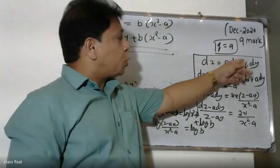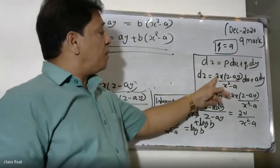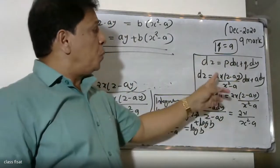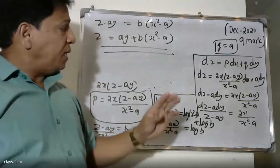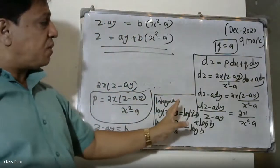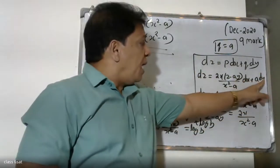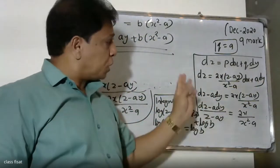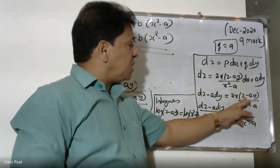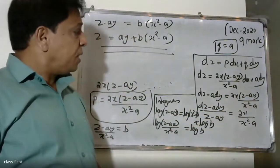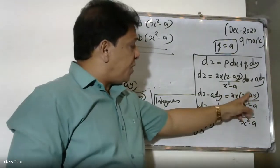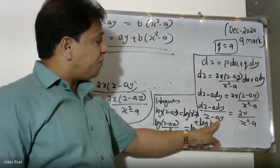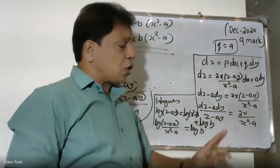The answer is z equals ay plus b into (x squared minus a). Noting that dz equals p dx plus q dy, where p and q: p equals 2x into (z minus ay) divided by (x squared minus a), and q equals a substituted. Rearranging when we integrate: dz minus a dy equals 2x into (z minus ay) divided by (x squared minus a) dx. This gives z minus ay equals 2x divided by (x squared minus c).